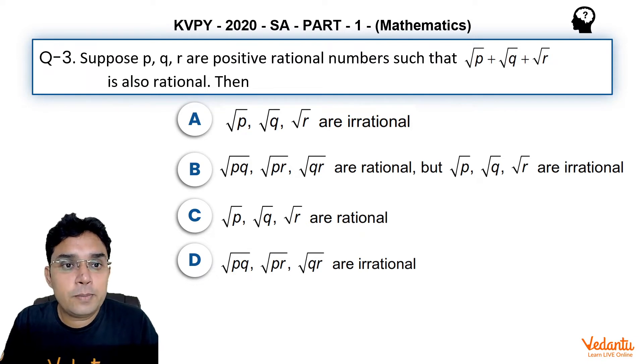It says: suppose p, q, r are positive rational numbers such that √p + √q + √r is also rational.